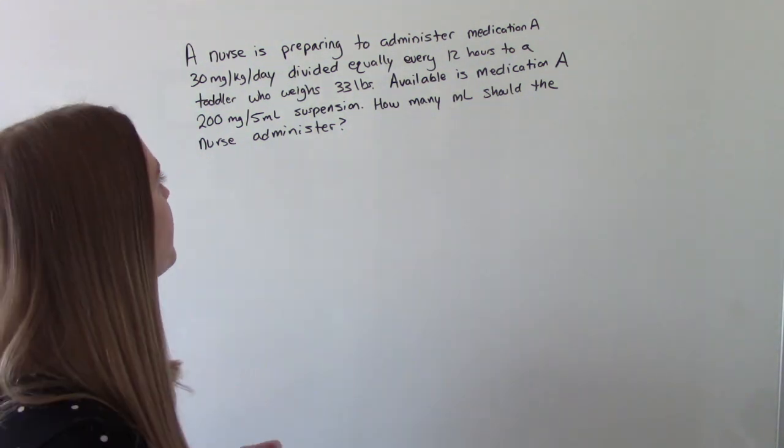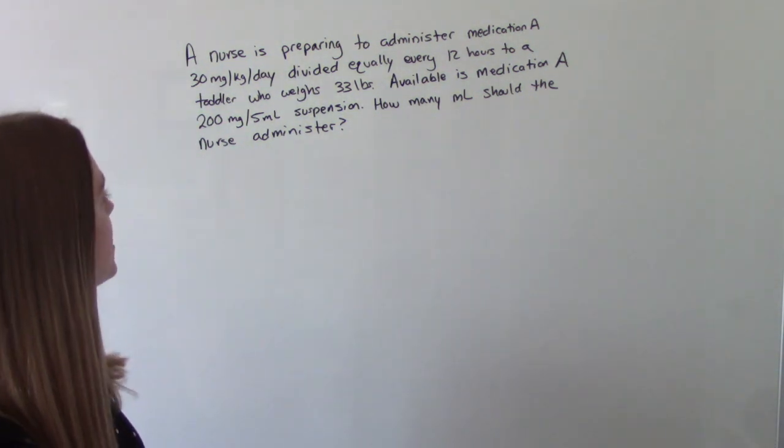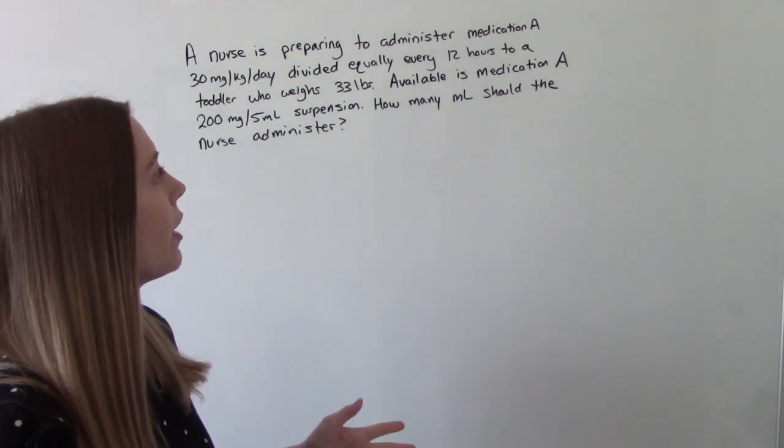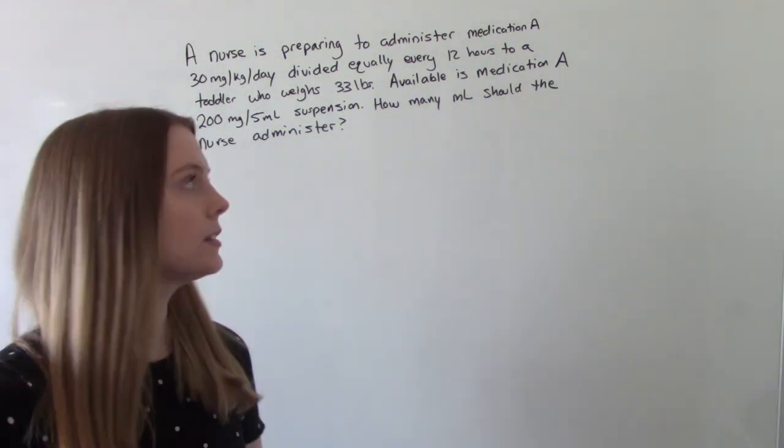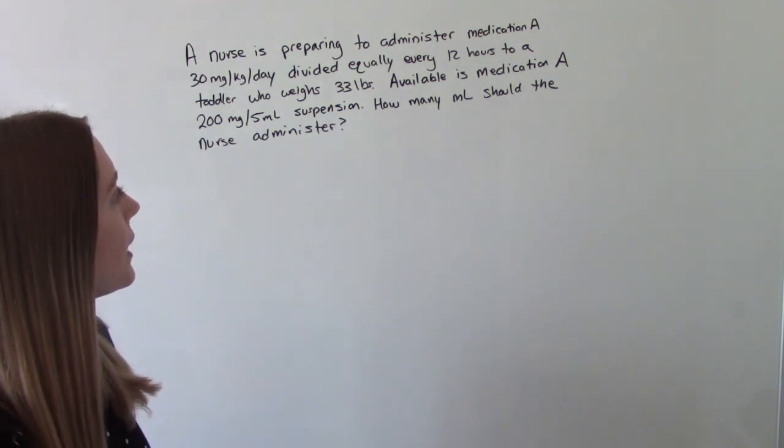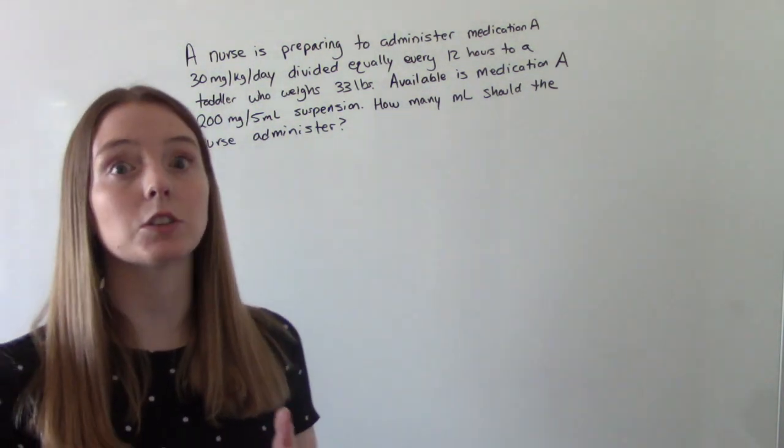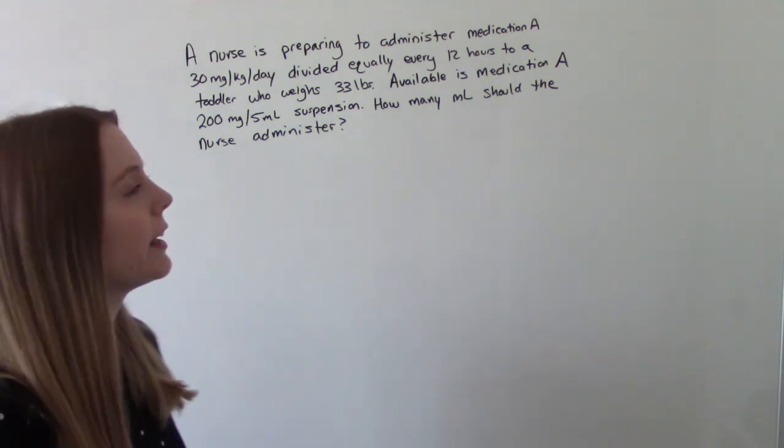We have the nurse. They are preparing to administer medication A, 30 milligrams per kilogram per day, divided equally every 12 hours to a toddler who weighs 33 pounds. Available is medication A, 200 milligrams per 5 ml suspension. So how many ml's should the nurse administer?